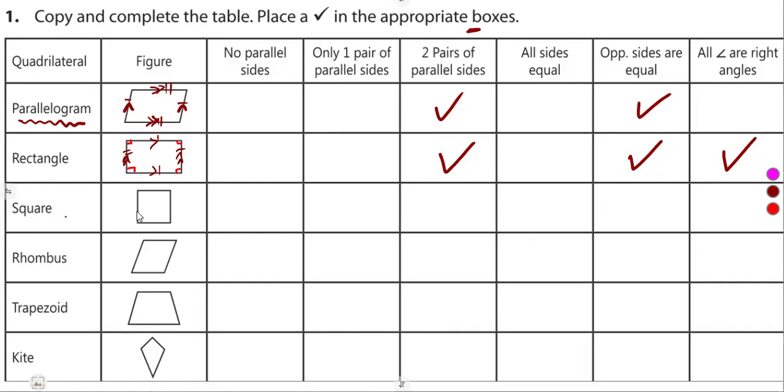A square, the same thing. Opposite sides are parallel and equal. But only this case is that all sides are equal - all of them. So we have two pairs of parallel sides, all sides are equal.